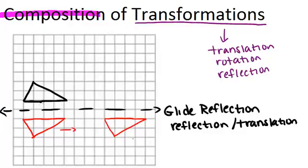If ABC was the original and A' B' C' was the result, then from here to here is called a glide reflection. Another common composition of transformations is when you do two reflections over parallel lines.